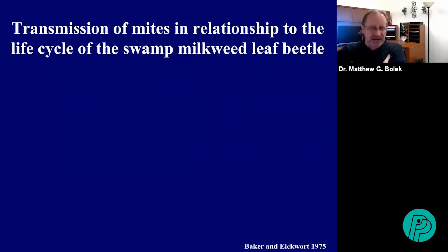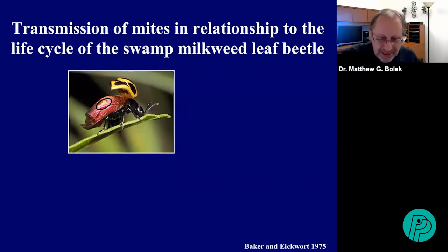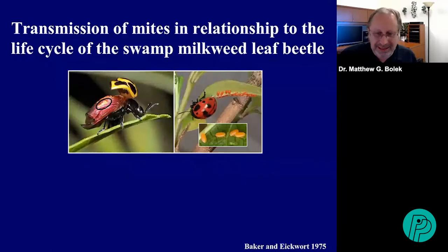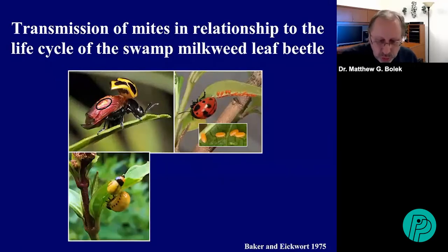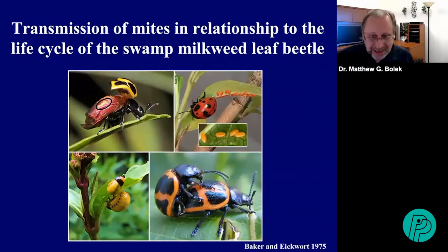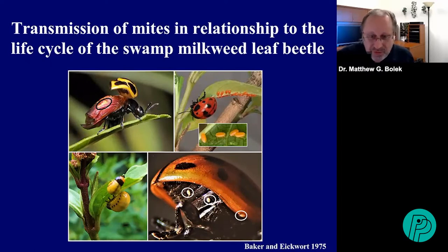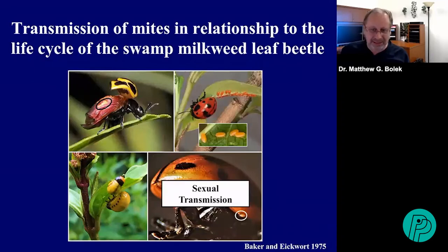What about transmission of these mites in relation to the life cycle of the swamp milkweed leaf beetle? The beetle arrives on a milkweed plant and brings its parasites with it — you can see eggs on the inner wings. The female beetle then lays eggs on that milkweed plant. The mites never infect larvae; they always stay on the adults. So how do new beetles get them? When an infected beetle mates with another beetle, the female mites crawl down from under the wings onto the abdomen and jump hosts to the second beetle. Transmission in this mite is always sexual.